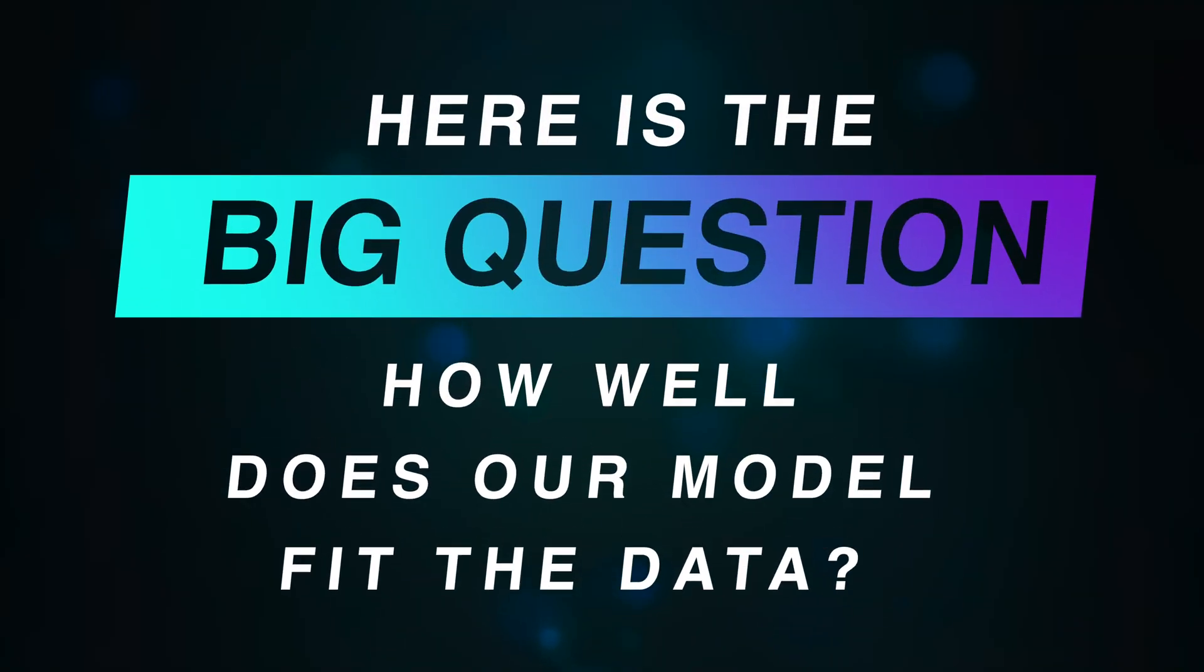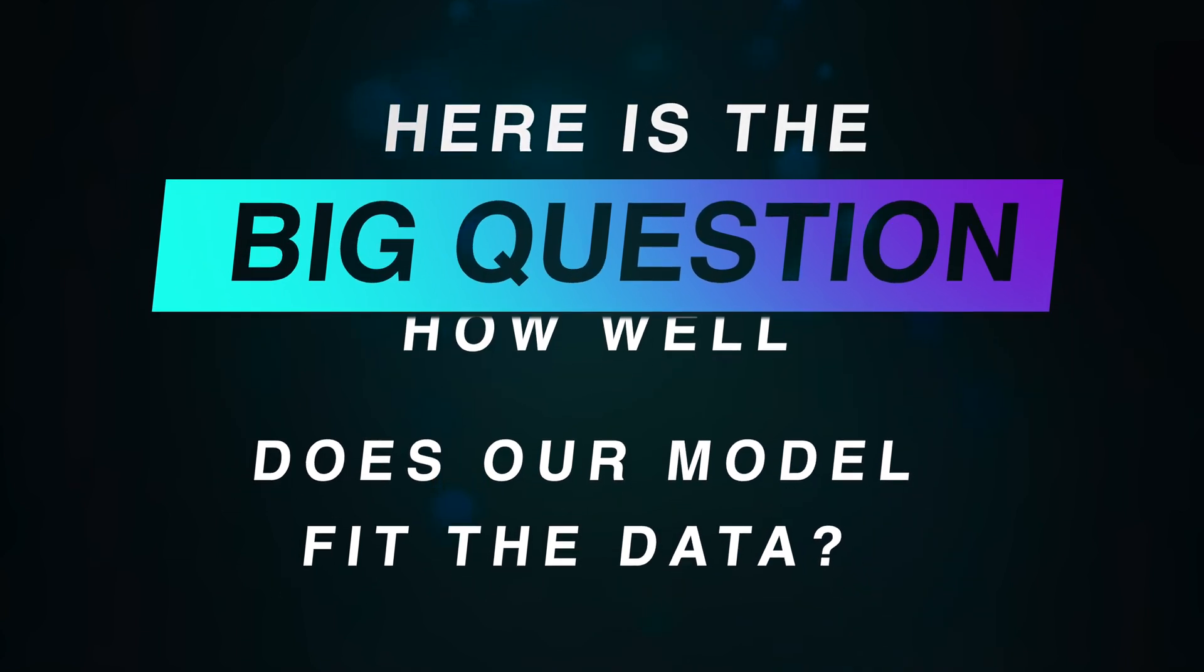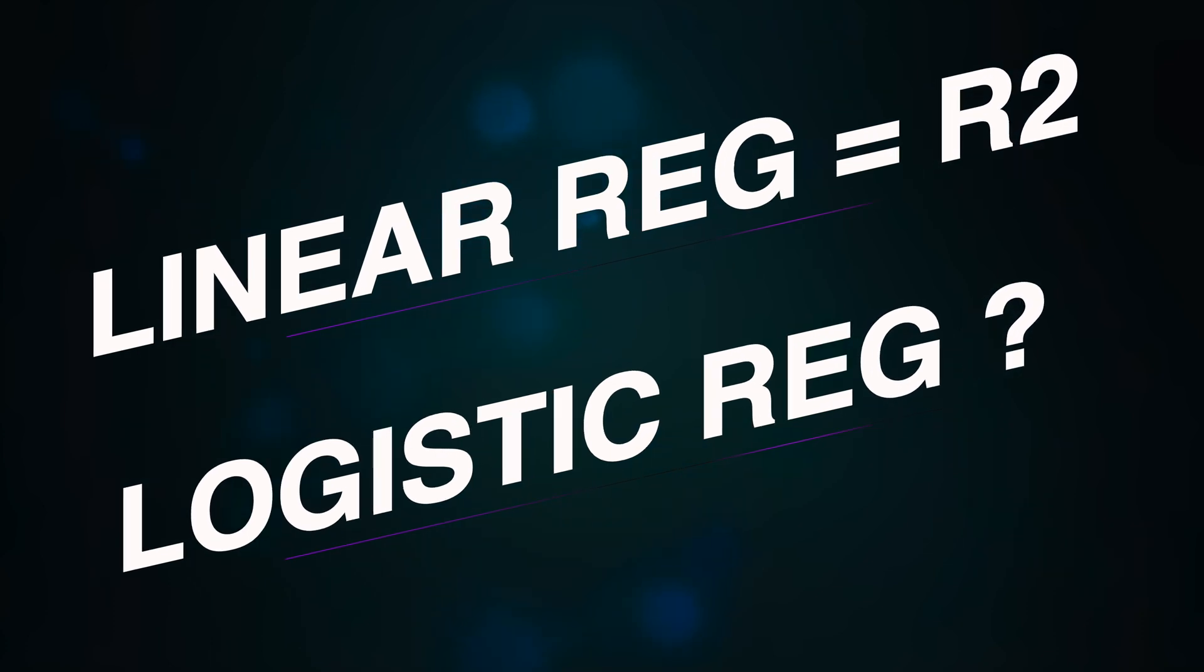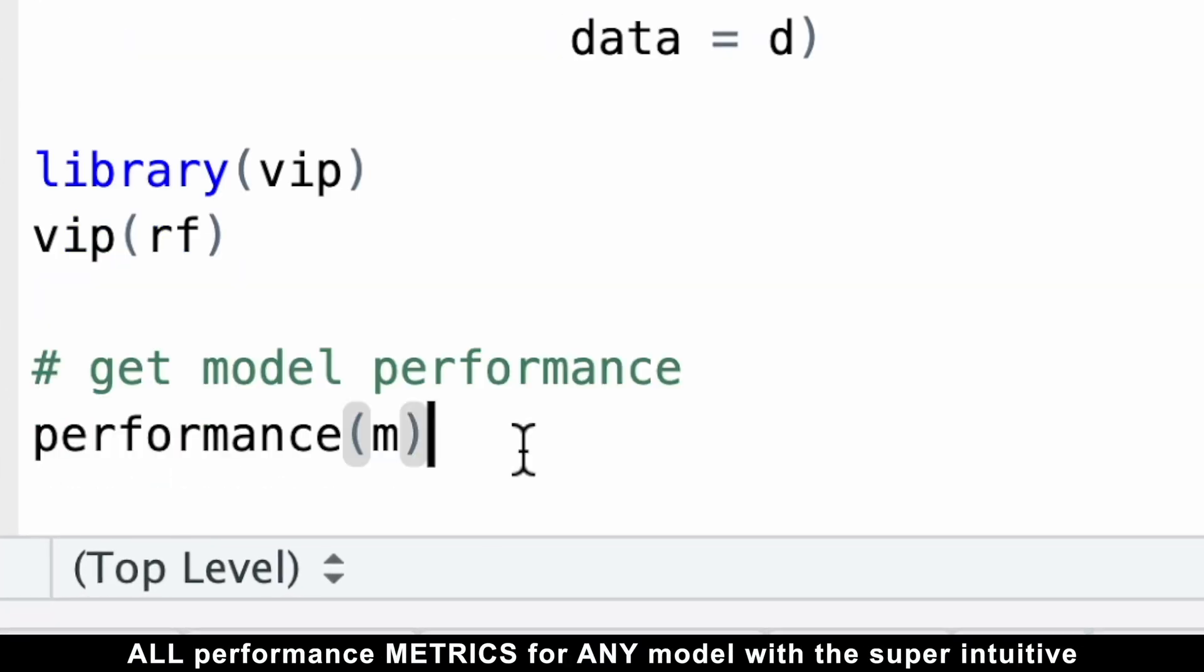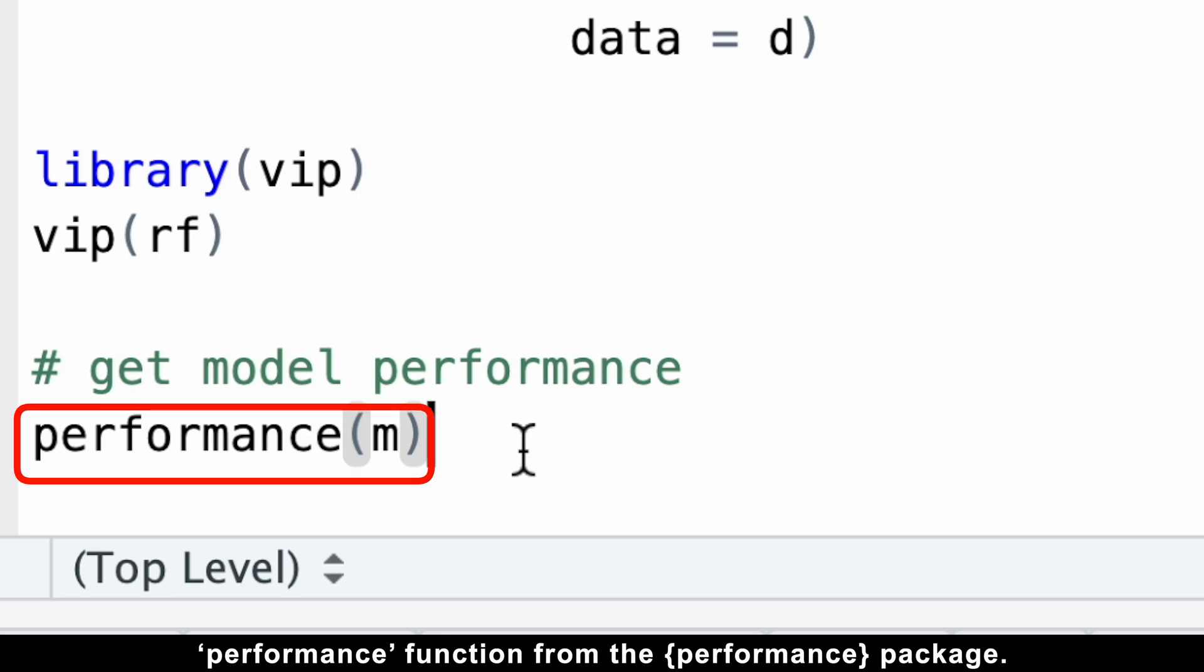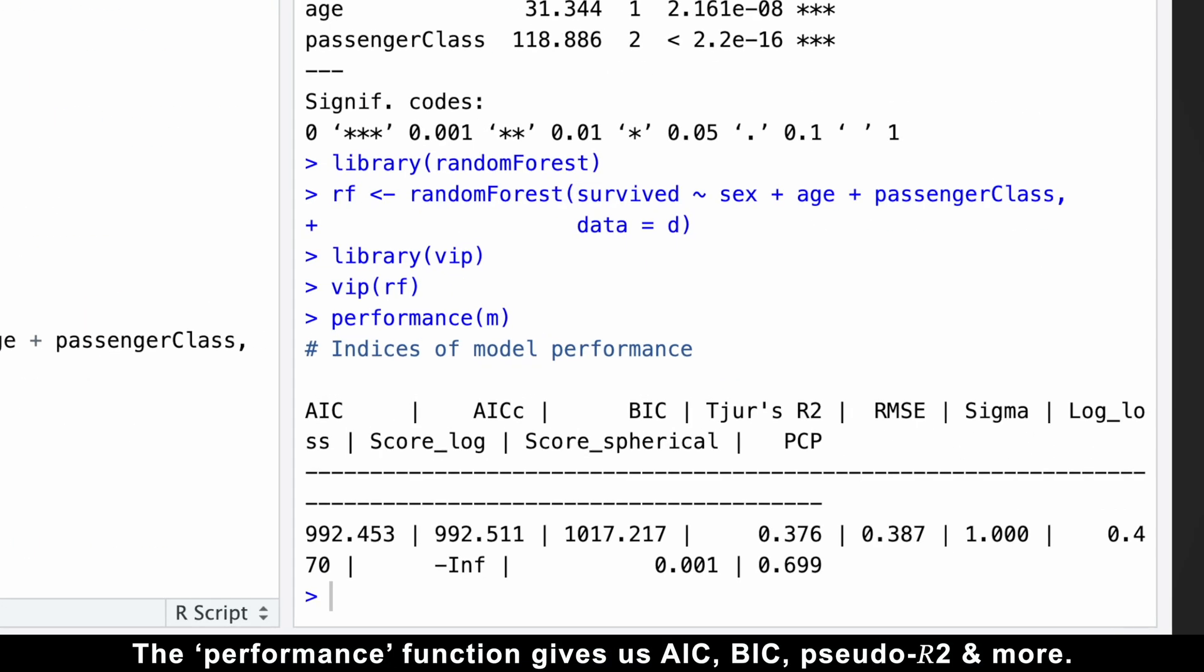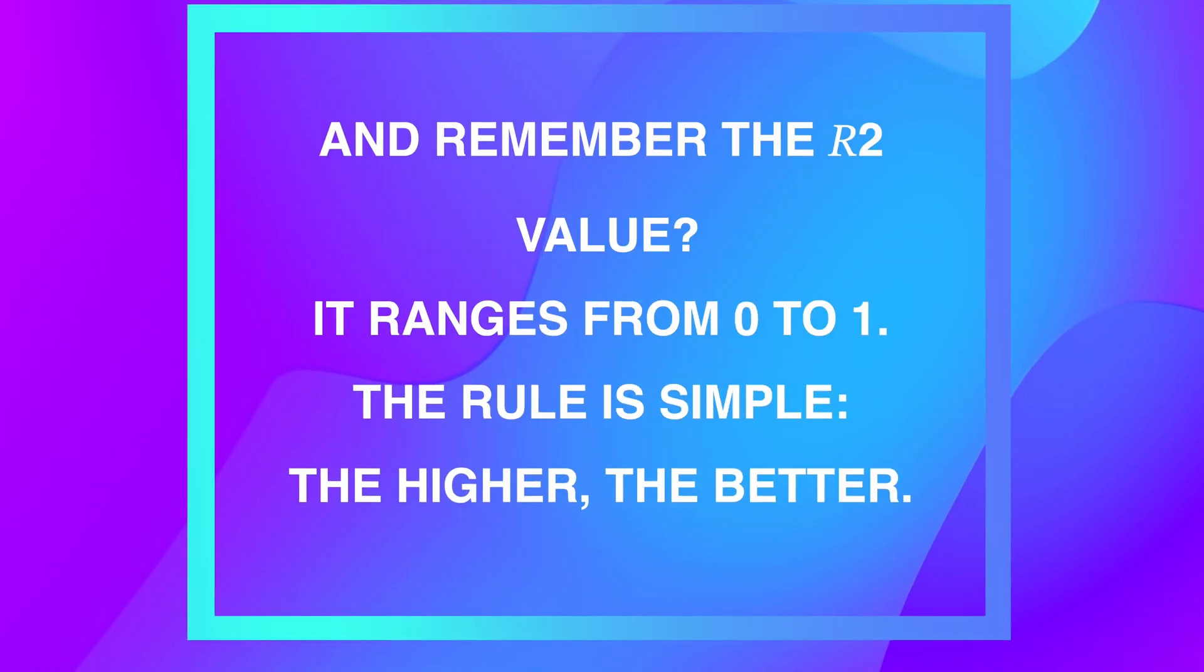Alright, here's a big question. How well does our model fit the data? Your clients are definitely going to ask this. While linear regression uses R-squared for goodness of fit, logistic regression can be a bit trickier. But no worries, I've got you covered. We can get all performance metrics for any model with a super intuitive performance function from the performance package. This is the same package that lets us check all assumptions in one go. The performance function gives us the AIC and BIC information criteria, Bayesian information criteria, pseudo R-squared, and more.